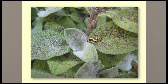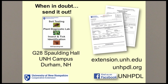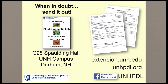Finally, remember that the UNH Cooperative Extension Plant Diagnostic Lab and Arthropod ID Center are resources to help you identify plant problems and insects. Both are located in Spalding Hall on the UNH campus. Forms for both labs can be found at extension.unh.edu. The UNH Plant Diagnostic Lab can also be found at unhpdl.org and on Facebook at UNHPDL.